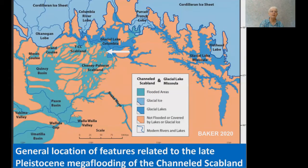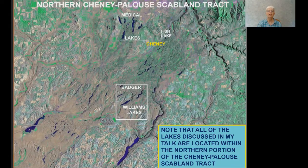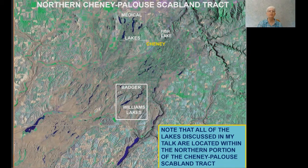General location map: we're going to be focusing on this area just south of Glacial Lake Columbia and the upper end of the Cheney-Palouse Scabland tract. This is an air photo of the northern Cheney-Palouse Scabland tract of the study area. The first lakes I'll talk about will be Williams and Badger Lakes, and then later I'll move up into the Medical Lakes area and finally Fish Lake. Note that all the lakes within this region are long and thin and oriented parallel to the flow of the Ice Age floods.